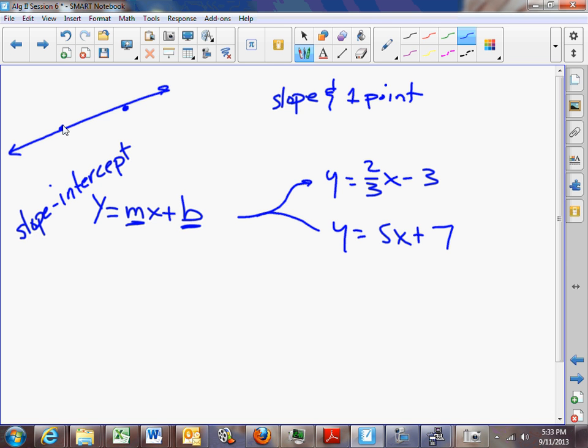But y and x have stayed as y and x. Now, one of the things that I need you students to understand is that when we use the general formula, slope-intercept, and are asked for an equation of the line, the job that we have is to figure out what number to put in for m and what number to put in for b.